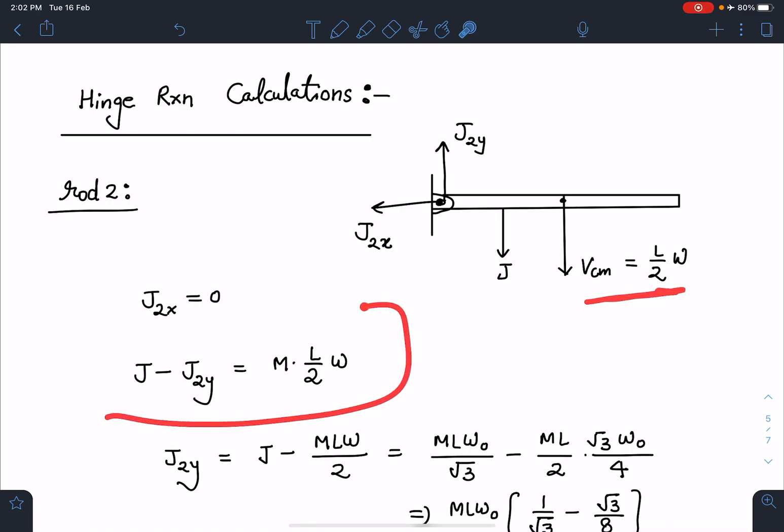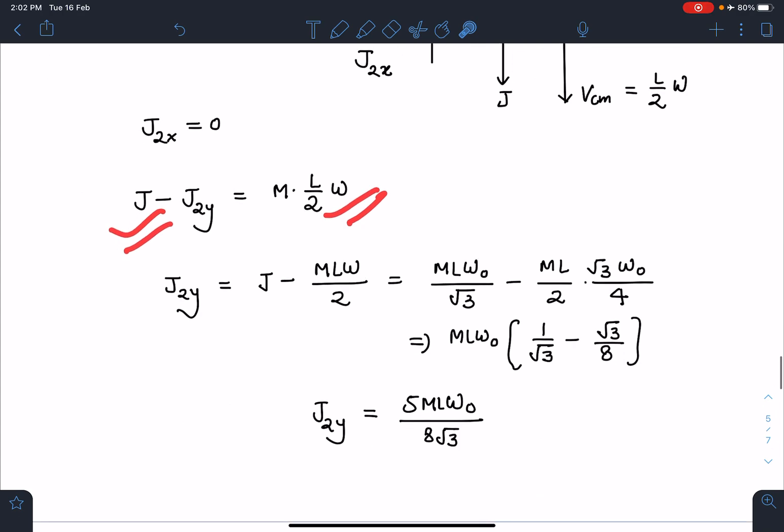In the vertical direction here, I can write J minus J2y equals change in linear momentum of center of mass. I have to use VCM here. Initially center of mass is at rest, finally it is moving with L by 2 omega. So J minus J2y equals ML omega by 2. When I substitute the value of J and omega in this case, which we previously calculated, I am going to get this J2y as 5ML omega naught by 8 root 3. This is the answer for this part if they are asking the impulse acting at the hinge.